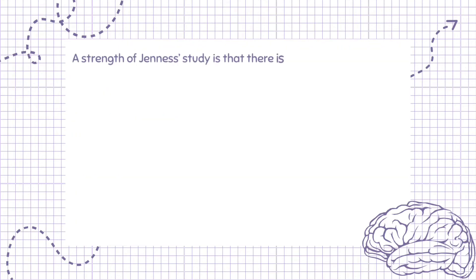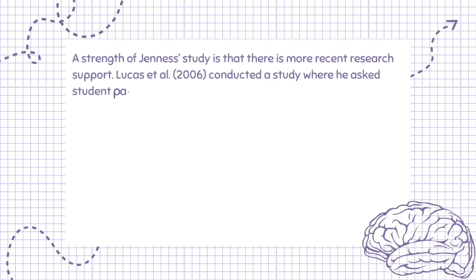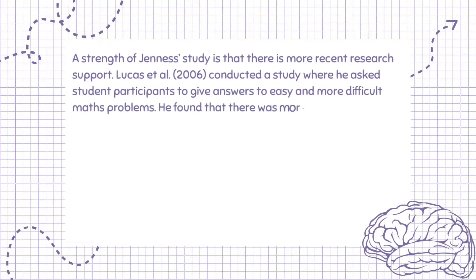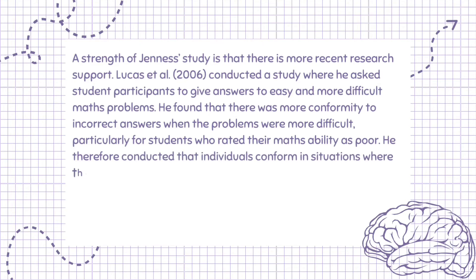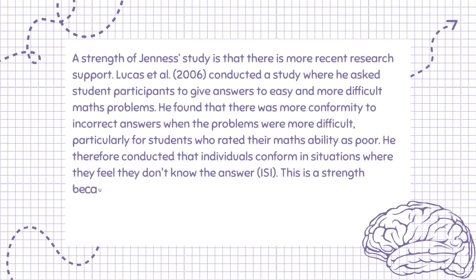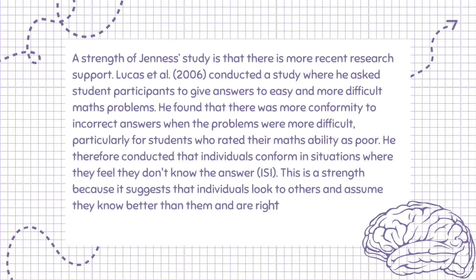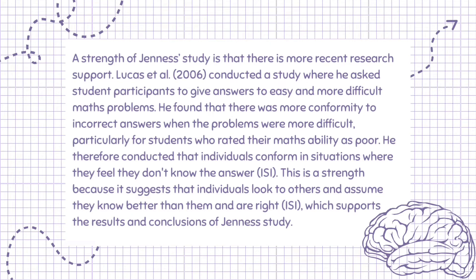A strength of Jeunesse's study is that there is more recent research support. Lucas et al., 2006, conducted a study where he asked student participants to give answers to easy and more difficult maths problems. He found that there was more conformity to incorrect answers when the problems were more difficult, particularly for students who rated their maths ability as poor. He therefore concluded that individuals conform in situations where they feel they don't know the answer — ISI. This is a strength because it suggests that individuals look to others and assume they know better, ISI, which supports the results and conclusions of Jeunesse's study.